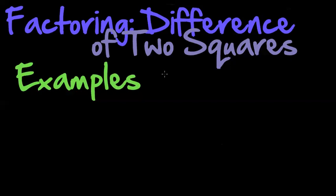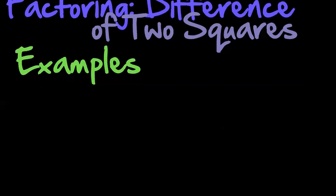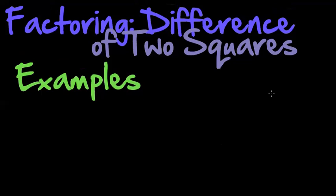Hello again and welcome to this lesson. We're still doing factoring the difference of two squares and we're looking at some examples. I'm going to think up a few examples to show you, and I'll start with a very basic and very common one: x squared minus 1.